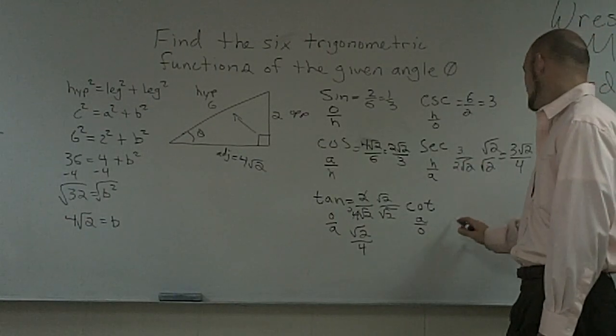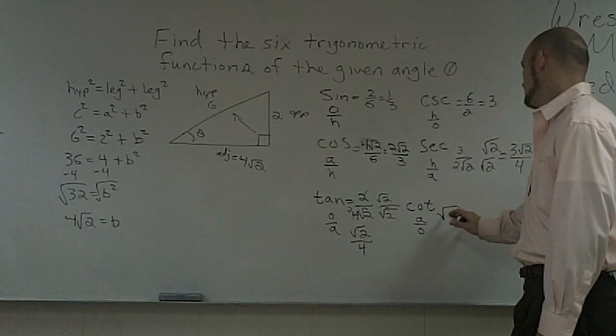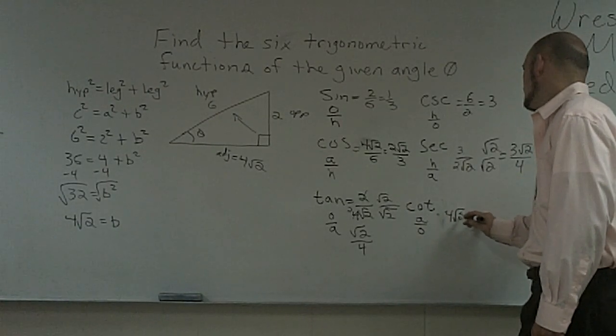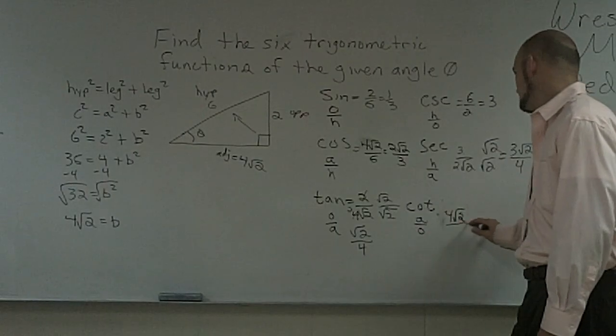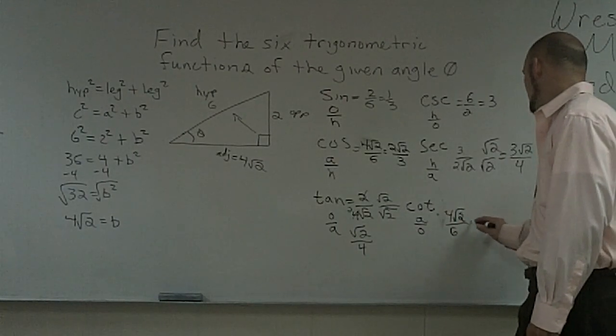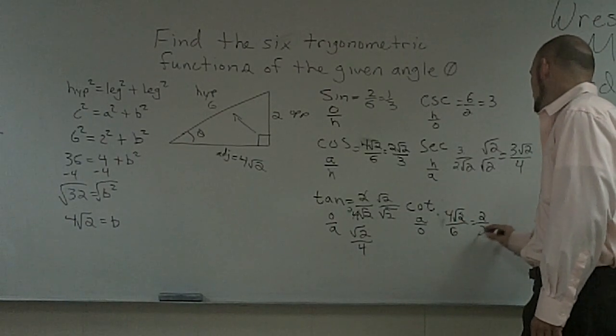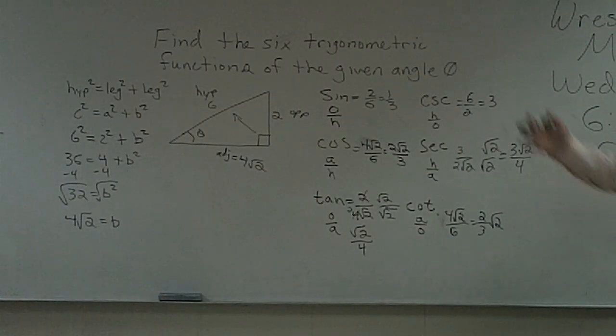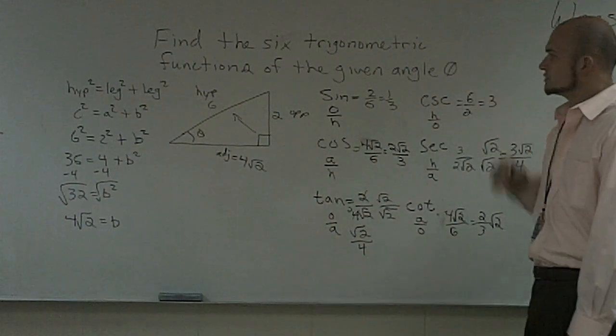And then my cotangent, which would be my adjacent, 4 square root of 2 over 2, which becomes 2 square root of 2. So when given a triangle to find the 6 trigonometric functions, that's how you do it.